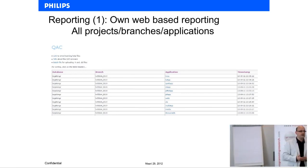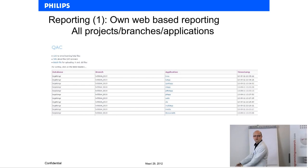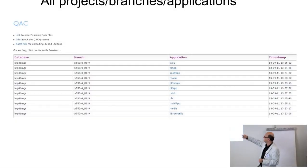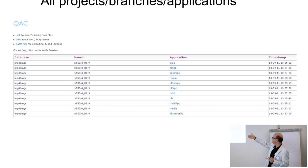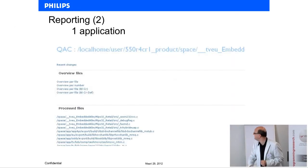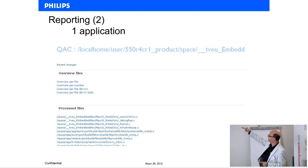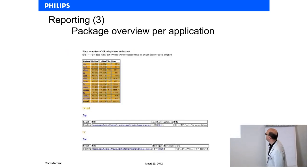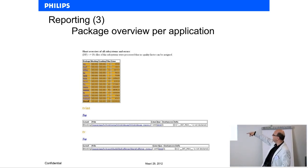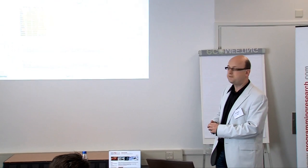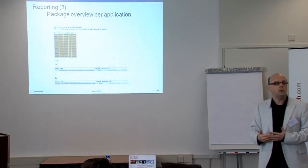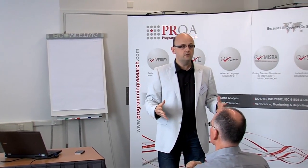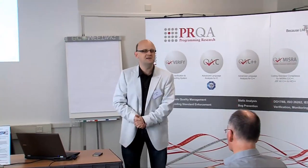The reporting we do ourselves is web-based. You can see on the left-hand side different databases with the branch, the application that is run, and the timestamp. Going into more detail, you see an overview per file, per number, with blocking, crashings, and defect preventions. Going further, you see per package — because our complete system is decomposed into packages and subsystems — the blockings and crashings with the quality factor next to it. You click on a line and immediately see what is going on. We don't use the GUI.